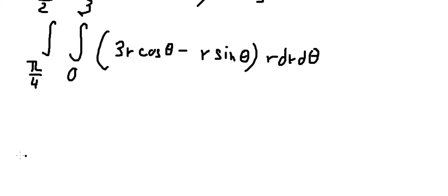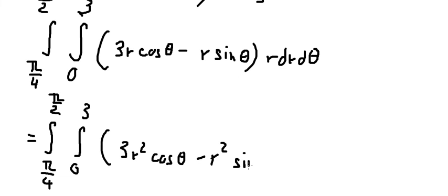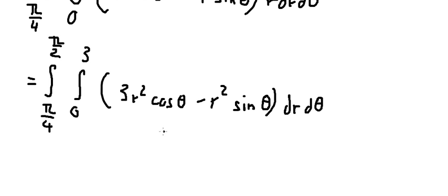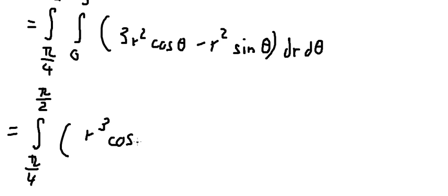Now we need to calculate. r multiplied by r gives us r squared, so we have 3r squared and negative r squared sine theta. We need to integrate r squared and r squared here. The integral of r squared gives r to the power of 3, and we have r cubed over 3.